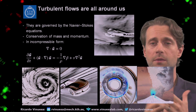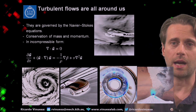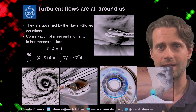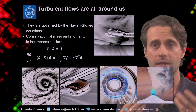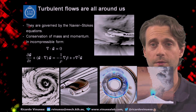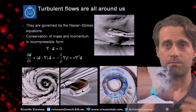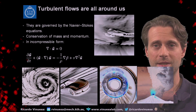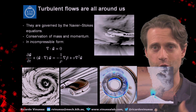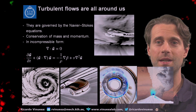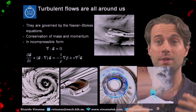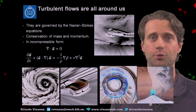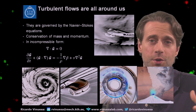Turbulent flows are all around us. As you can see, all these images are characteristic examples of turbulence. I produced all of them using generative AI — basically stable diffusion. So there might be some connection between deep learning and what we actually know about turbulence.